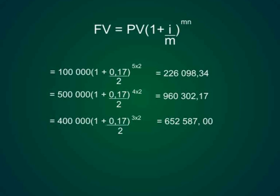Add those three figures together that gives me an answer of 1,838,987 Rand and 51 cents. So he is still going to be about 160,000 Rand short.